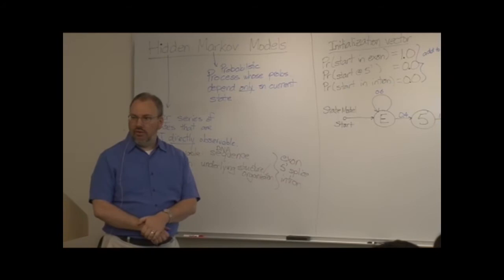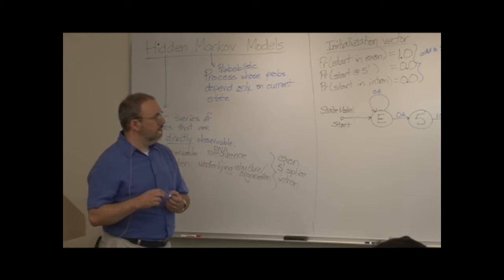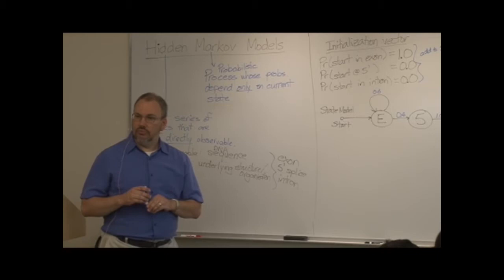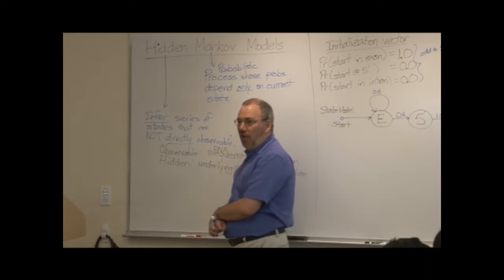I guess I don't understand why it's not one. I think the model just keeps going until the end of the sequence, right? Yes. And the way I'm reading your state model is that the end of the sequence is going to be in the intron, and so you're always going to end at an intronic base pair. So why isn't it just one, and then when you get to the end of the sequence, it's just over?